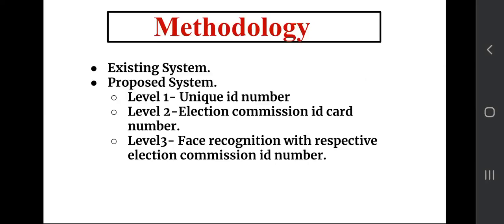The proposed method uses three different security levels: level one is the unique ID number, level two is the election commission ID card number, and level three is face recognition with respect to the election commission ID number.